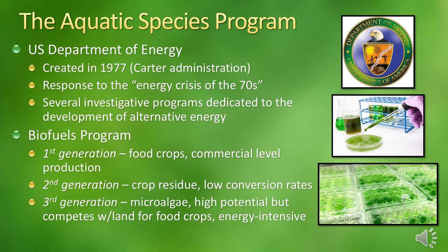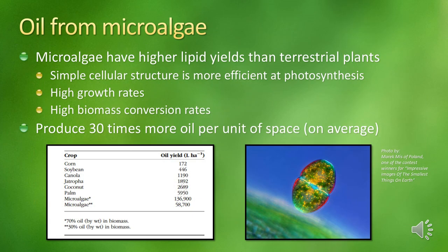Biofuels are subdivided into categories, and microalgae are considered third generation. First generation are ethanol and biodiesel derived from food crops that have reached commercial production. Second generation fuels are residue from agriculture and forestry — non-edible components like wood chips, stems, leaves, or seed casings — but these tend to have low conversion rates. Third generation is specific to the thousands of species of microalgae, which have legitimate potential for commercial use. Downsides are that algal ponds for large-scale production would require a lot of space, competing with arable land, and the production and conversion process is quite energy-intensive.